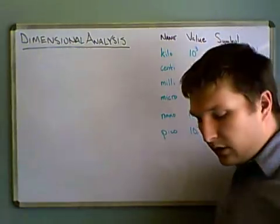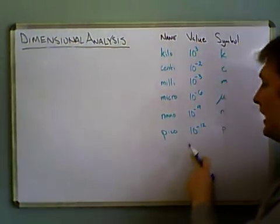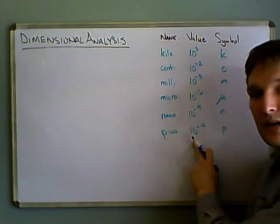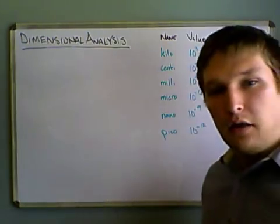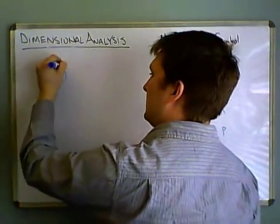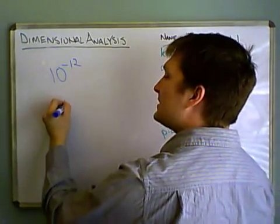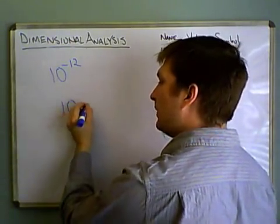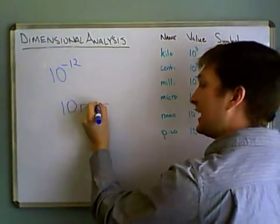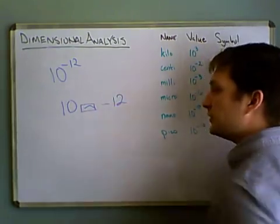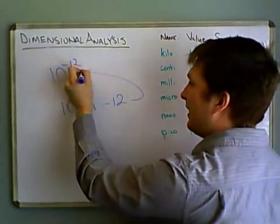Now with the caret key, that comes in handy for stuff like this. So for instance, let's say we wanted to write 10 to the negative 12 in our calculator. Well then we would type in 1, 0, and then the caret key, and then the negative 1, 2. And the calculator will read that as this.